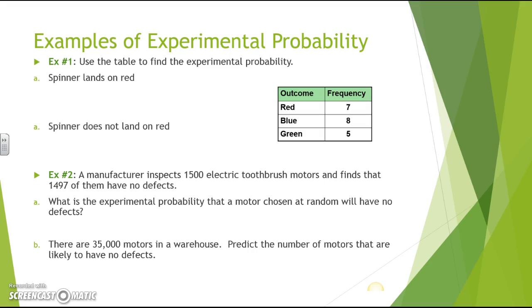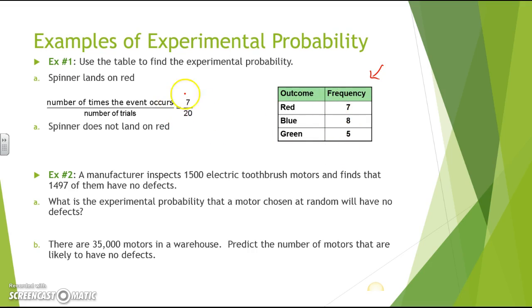Now let's look at some examples of experimental probability. Using a table of spinner outcomes: the spinner lands on red 7 times, blue 8 times, and green 5 times. To find the experimental probability of landing on red, add up the total outcomes: 7 + 8 + 5 = 20. So it's 7 out of 20. For the spinner not landing on red, add 8 and 5 to get 13 over 20.